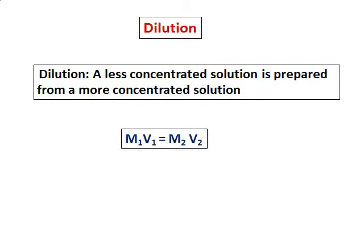The next topic in the chapter of aqueous solution is dilution. Dilution is when a less concentrated solution is prepared from a more concentrated solution. One of the formulas you'll be using is M1V1 equals M2V2, where M1 and V1 are the concentration and volume of the concentrated solution, and M2 and V2 are the concentration and volume of the diluted solution.